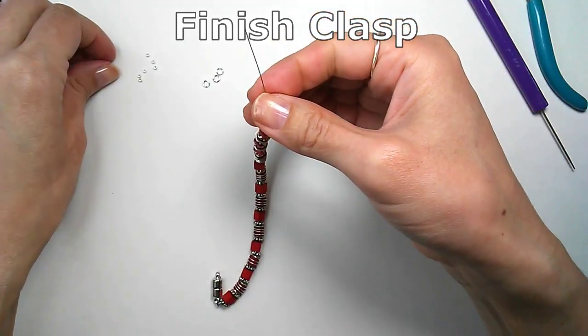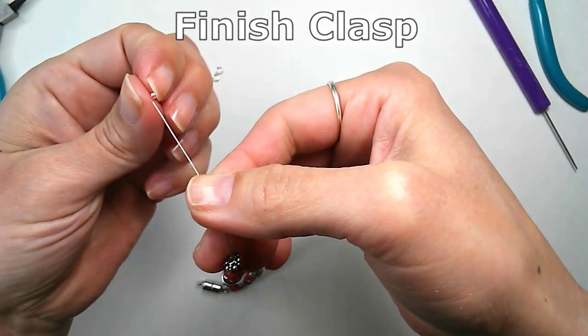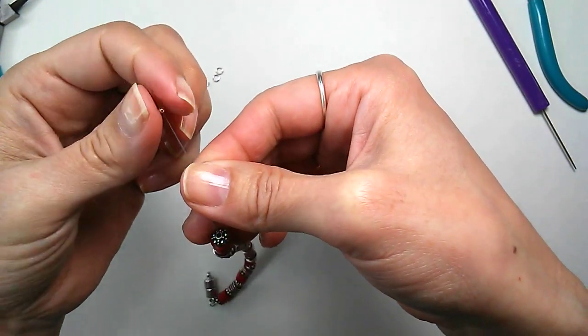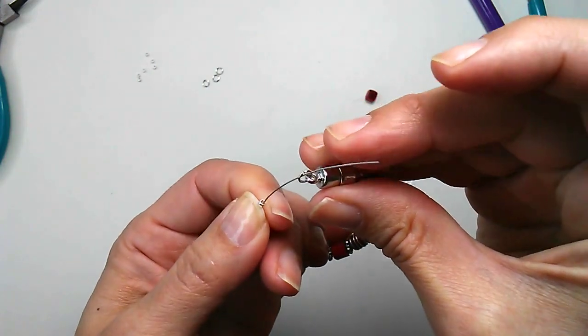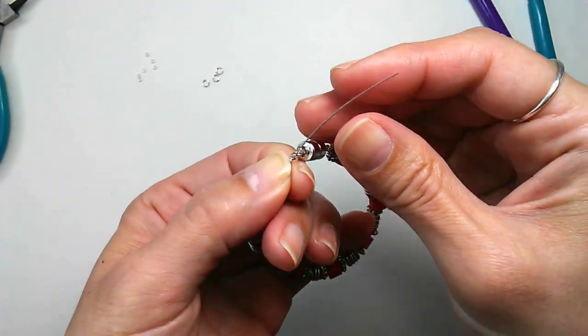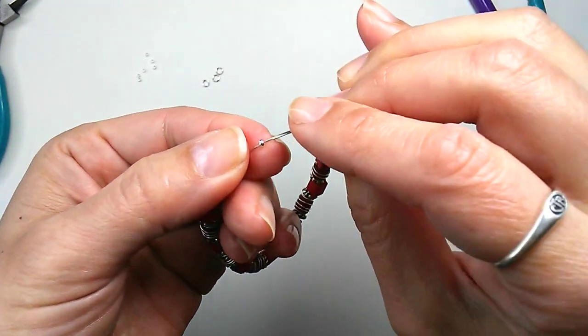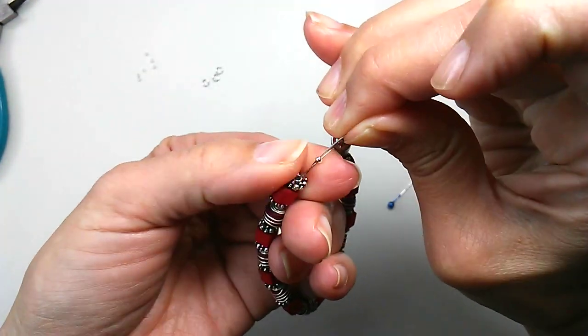Now we want to finish the bracelet in the same way we started. So thread the tiger tail through a crimp bead, then through the other jump ring, and back through the crimp bead. And continue on through a few beads beyond that.